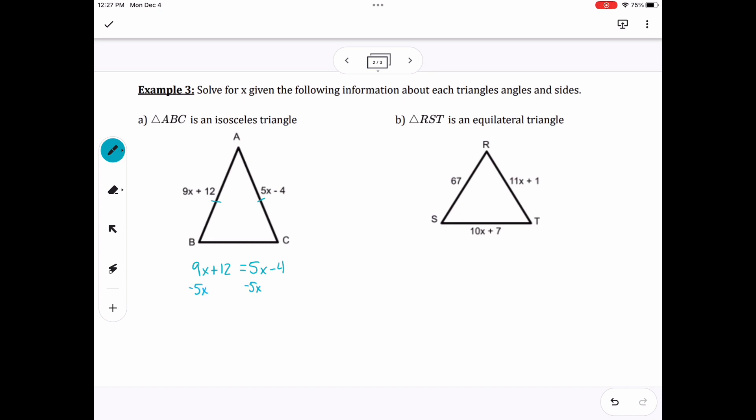So I'm going to subtract both sides by 5x. That gets me 4x plus 12 equals negative 4. Then I'm going to subtract 12 from both sides. That gets me 4x equals negative 16. And then divide by 4 so that I can see that x equals negative 4.